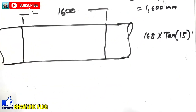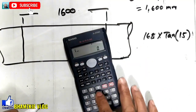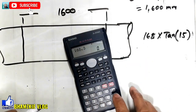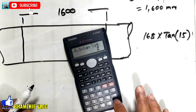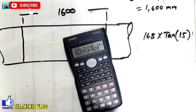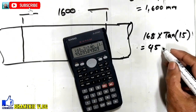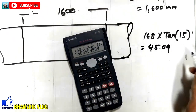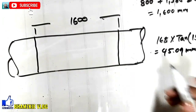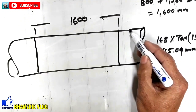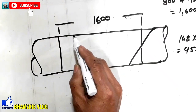I-calculate nyo yan. So, 168.3 times tan of 15 degree equals 45.09 mm. Dito mga kamital, gagawa tayo ng one cut dito sa isang side.